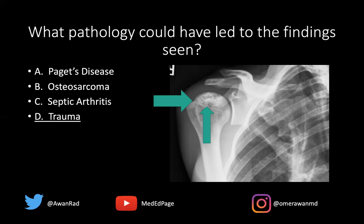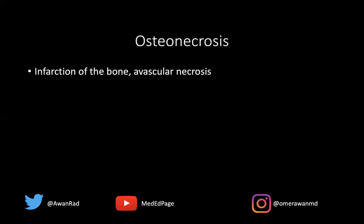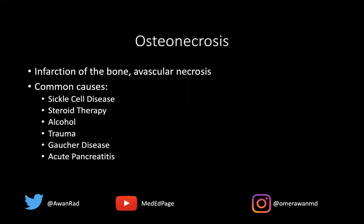Traumatic causes are a very important cause for osteonecrosis or avascular necrosis, typically in the patient population at University of Maryland, a shock trauma center. But there are a multitude of different causes of AVN — this is infarction of the bone where there's lack of blood supply to the underlying osteostructures. Sickle cell disease is the most common cause worldwide, but alcohol is by far the most common cause in the United States. Other causes include corticosteroids, trauma, Gaucher's disease, collagen vascular disease, and acute pancreatitis.